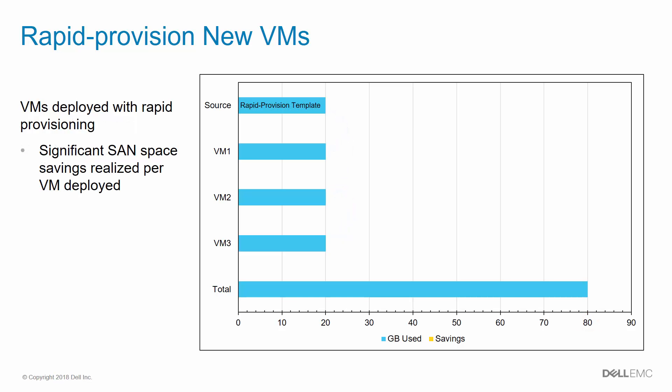In this exact same scenario, if these three VMs were deployed with rapid provisioning, the space savings would be significant. Instead of consuming an additional 20 GB of space for each VM deployed, only changed data would consume SAN space. The small amount of new data for each VM represents the Windows Server profile information created when the VM is booted for the first time. The key takeaway is that with rapid provision VMs, only changed data or new data will consume additional SAN space.